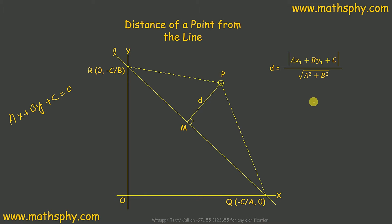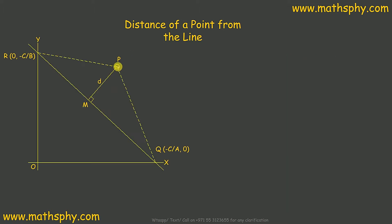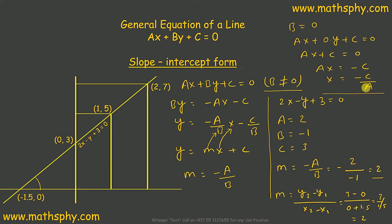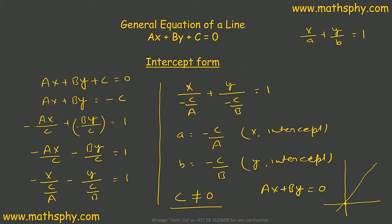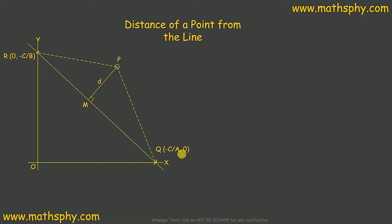We have point P, point Q, and point R. Q is the x-intercept and R is the y-intercept. For the x-intercept, x equals negative c over a, so Q is (−c/a, 0). For the y-intercept, y equals negative c over b, so R is (0, −c/b).